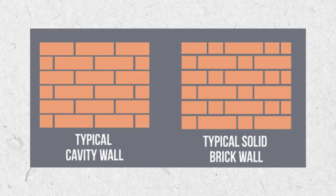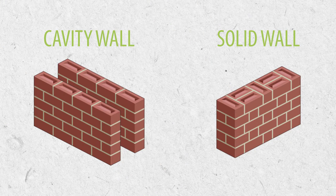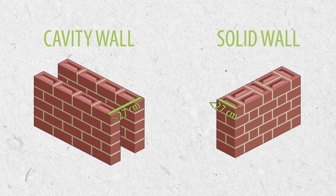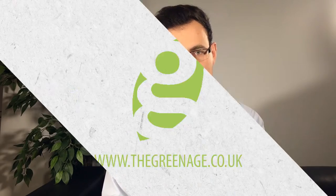Obviously if you've got render on your property then it's a bit harder. What you can do - and this is not definitive - is measure the thickness of the wall. Usually if it's thicker than 270 millimeters or 27 centimeters, it's probably a cavity wall; anything less than that it's solid. But the best way to find out in those situations is to call a professional to do something called a boroscopic inspection, where they drill holes through the render or brickwork and put a camera through to look for that cavity.